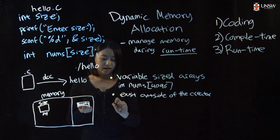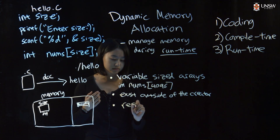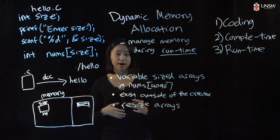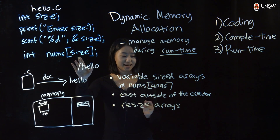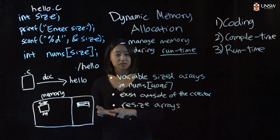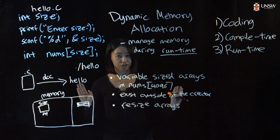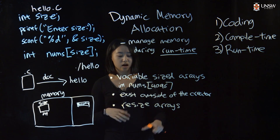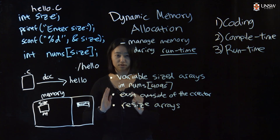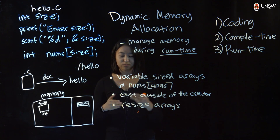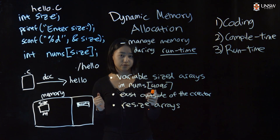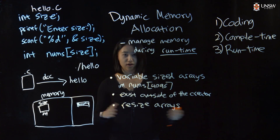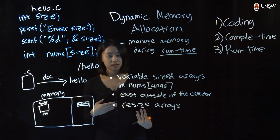Another great thing about dynamic memory allocation is that you can resize arrays. Usually when you create an array, you have to specify a size, and you are committed to that size for the entire program — you can no longer change it. So if your nums array really only needs one integer, you'd be wasting a lot of space. With dynamic memory allocation, you can actually shrink that array if you need to. More often, you'll realize you need more space than you decided at first, so you can grow that array as much as you need, as many times as you need. That gives you a lot more flexibility in your programs.